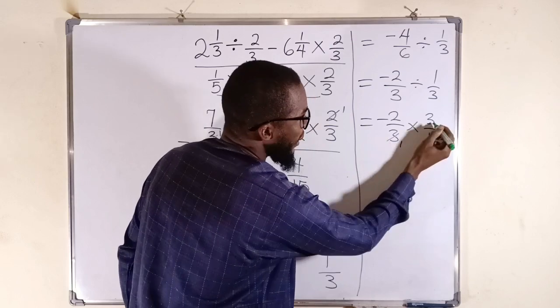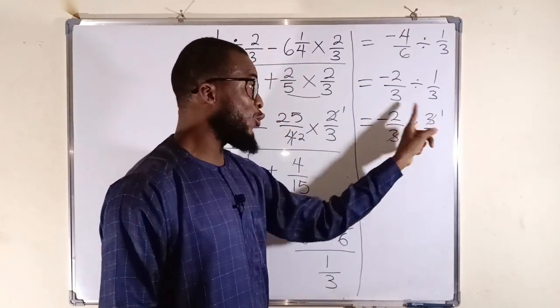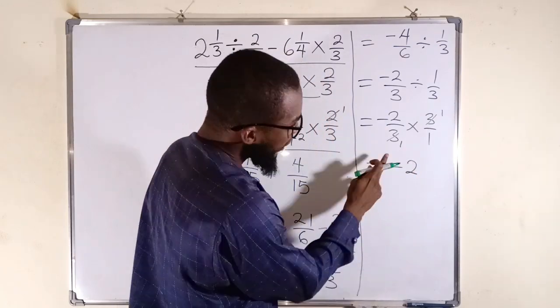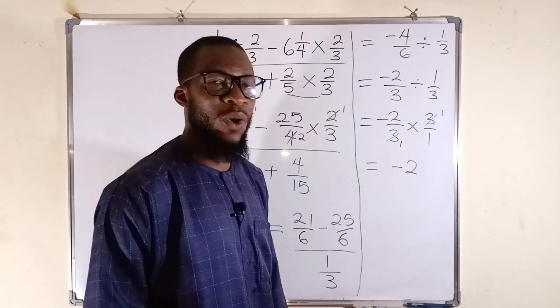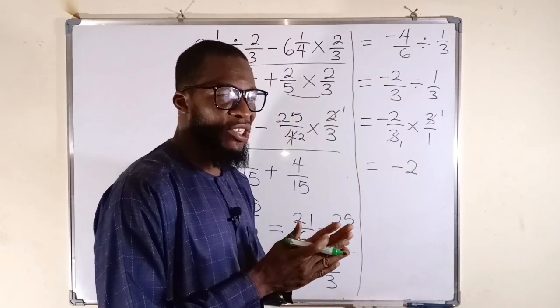3 into 3, 1 time. So to the top, we have negative 2 multiplied by 1. Negative 2 multiplied by 1 is still negative 2. Divide by 1 times 1, which is 1. So you don't have to divide by 1 because dividing by 1 will not change anything.